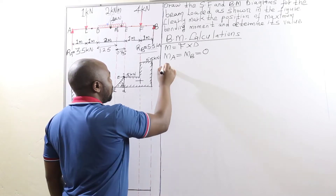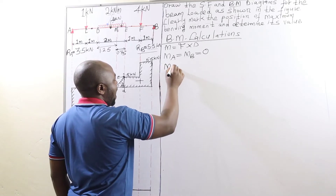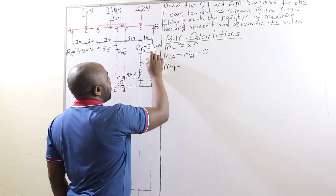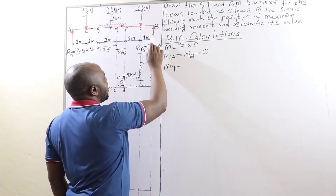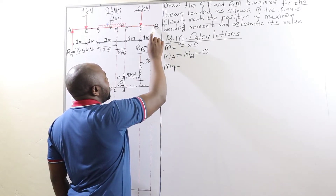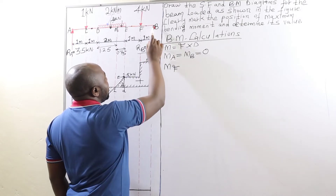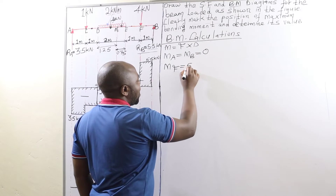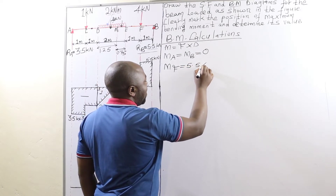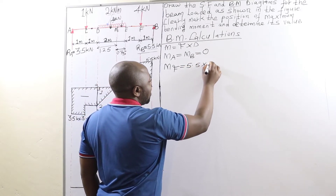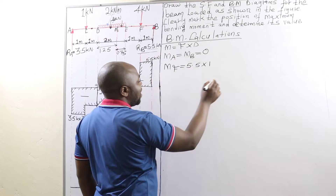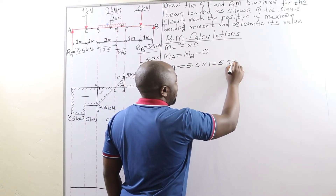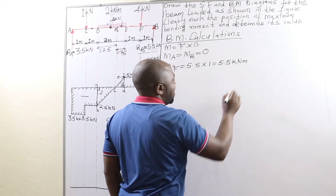From there, we go to bending moment at point F, which is going to be the reaction at B of 5.5 kilonewtons times the distance from B to F. So we are going to have 5.5 kilonewtons times one meter, which gives us 5.5 kilonewton meter.